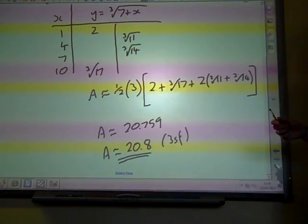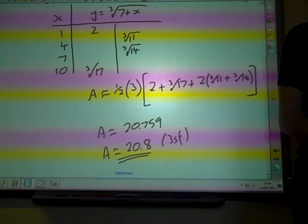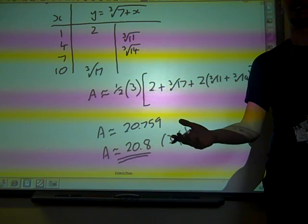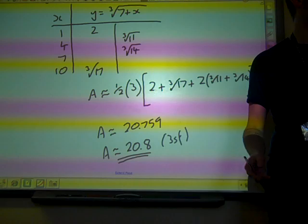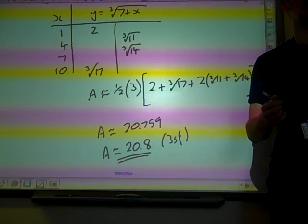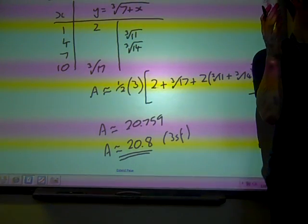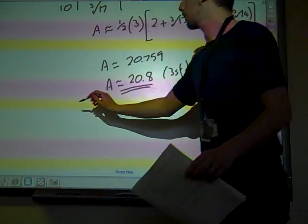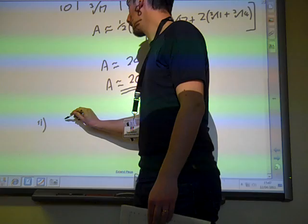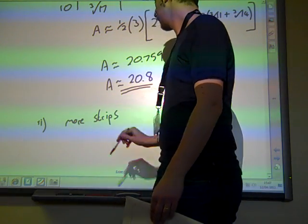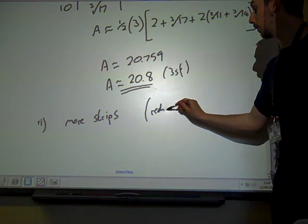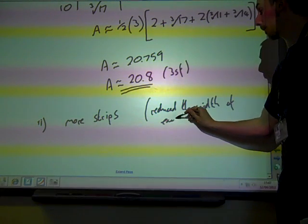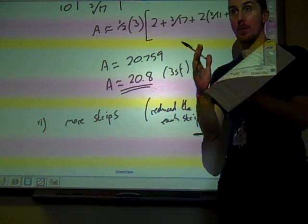Now, the second part of this question, the last bit, did say explain how the trapezium rule could be used to obtain a more accurate estimate of the area. What could we have done? Increased the number of trapeziums, more strips, smaller width of the step size - any of those things. So part two, we could have had more strips, we could have reduced the width of each strip. The key thing is we would have had to do more strips.